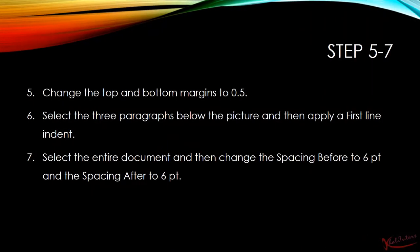We'll do step number 5 all the way up to step number 7. I'm just going to read the instructions and then we're going to go straight to it. Step number 5 says that we need to change the top and bottom margins to 0.5. We need to select the 3 paragraphs below the picture and then apply a first line indent. After that, we need to select the entire document and then change the spacing before to 6 points and the spacing after to 6 points.